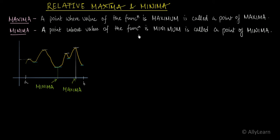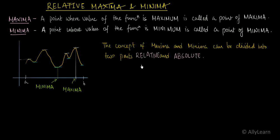The concept of maxima and minima can be divided in relative terms and in absolute terms. In this lecture, we will cover the relative part. Absolute maxima is the maximum value of the function over a given interval — that point is called the absolute maxima.